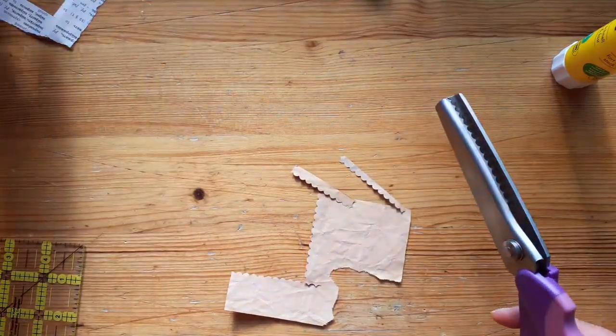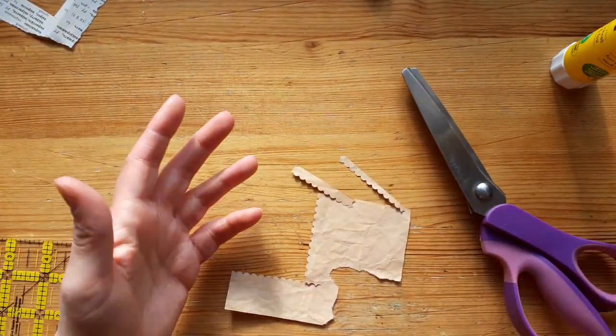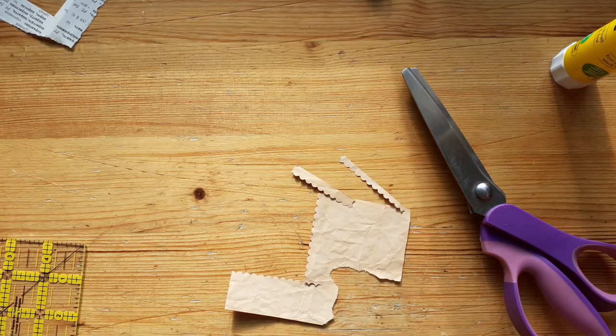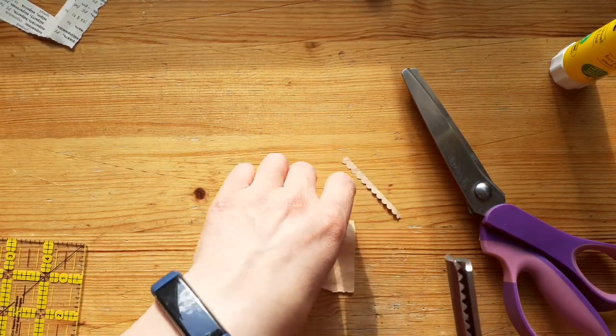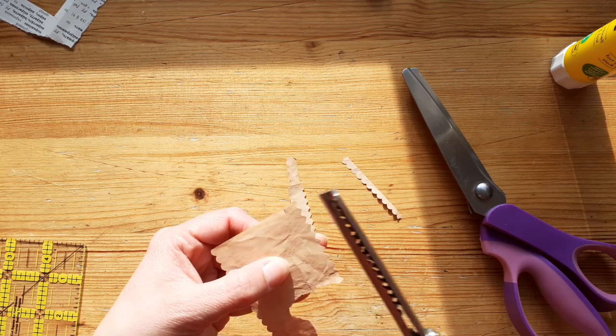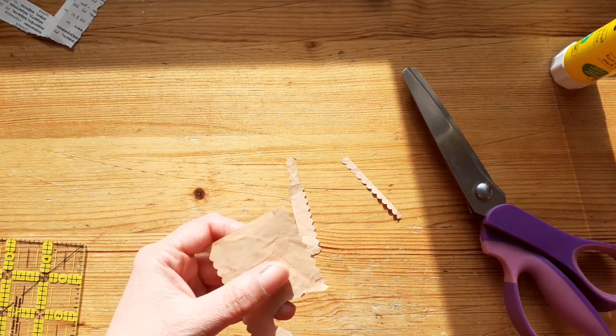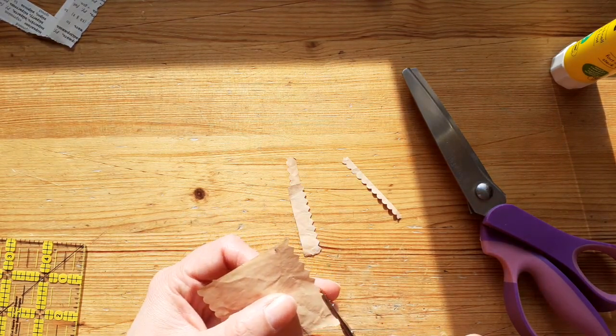If you do not have scalloped scissors, one of the things you can do is you can use pinking shears which a lot of us have, and then what I've seen some people do is literally just cut the tips off.